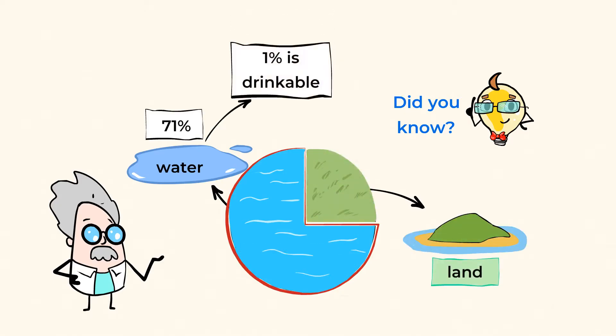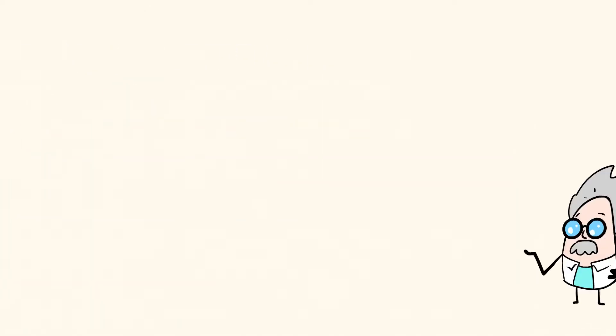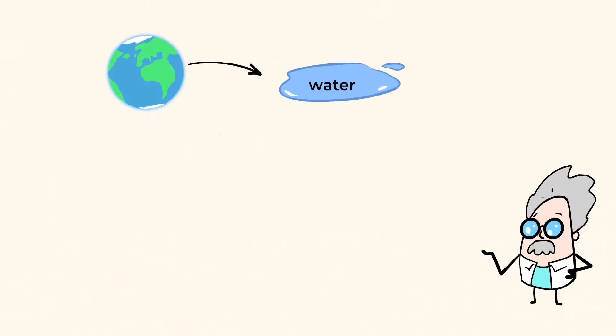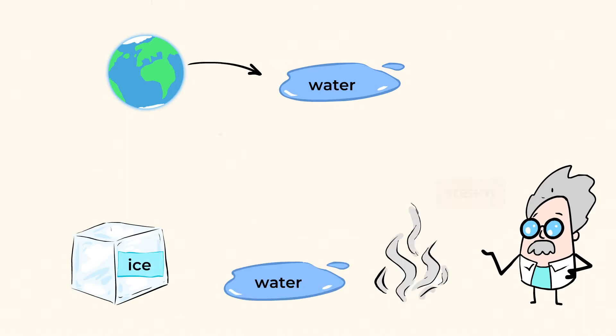But only one percent of that water is drinkable. And this is one reason why water is really important for scientists to study. But another reason is its ability to change its form from ice to water to steam.